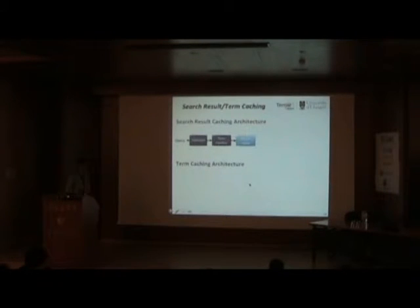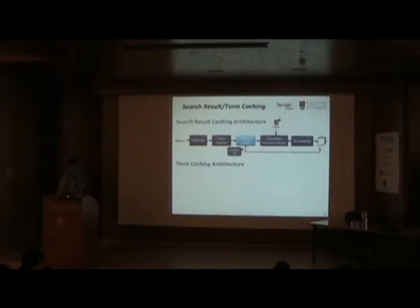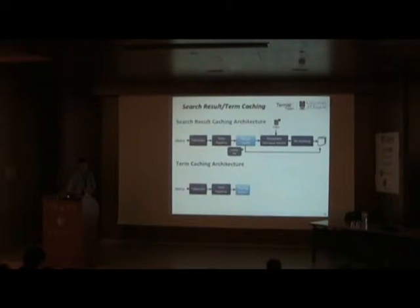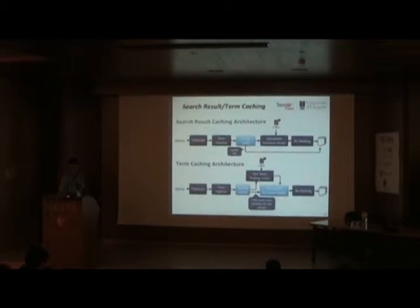For a search result cache: a query arrives, you check the results cache, and if there's a miss you score the documents as normal, then put those results back into the cache. The next time you see that query, you get a cache hit and return that page of results verbatim. For term caching, we assume the index is on disk but keep the posting list for some terms in memory. If all the terms are cached, we go straight into document retrieval; if not, we read them from disk and continue scoring as normal, while adding those posting lists back into the cache.